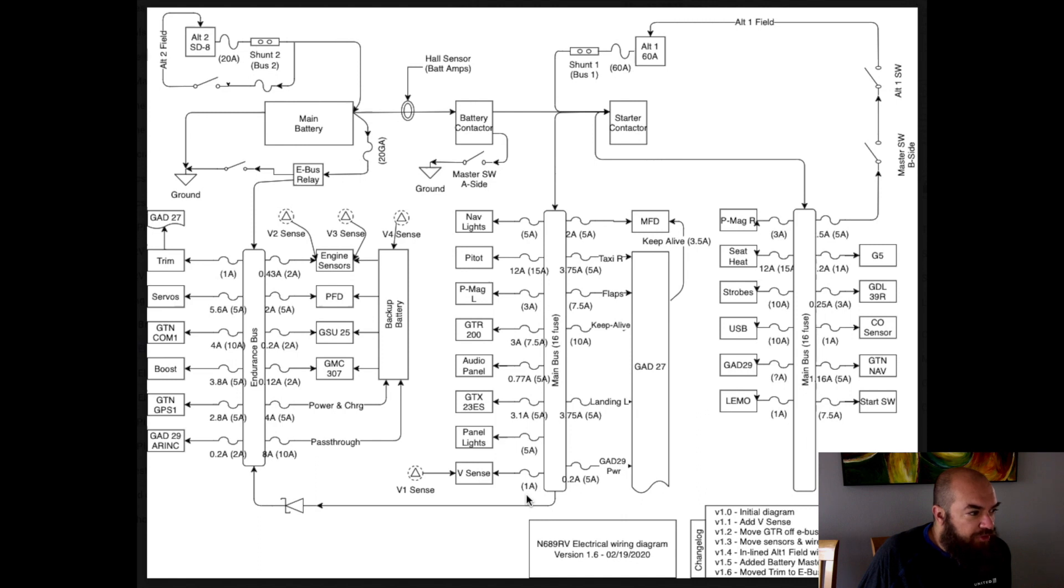So on the left there's an endurance bus, and then in the middle and the right are a main bus. These are just the two fuse blocks on the main bus. The endurance bus are the breakers that are on the panel on the right-hand side that you may have noticed. And the main bus are fuses that are actually behind that on a little shelf that swivels down. Up top you can see the battery, the main battery, the contactors and the alternators. So the main battery connects to the battery contactor, which is the main battery switch, and the battery contactor then connects to the starter contactor. And the alternator, the main alternator, the 60 amp Plane Power is connected here.